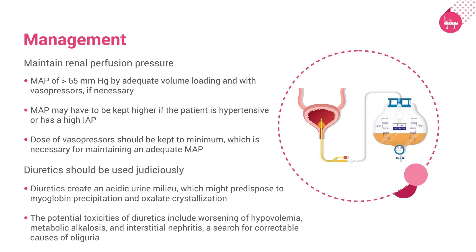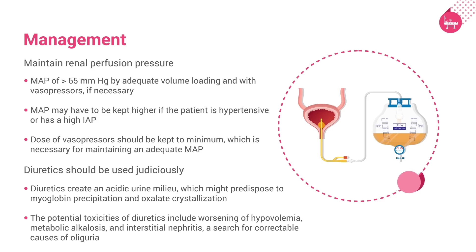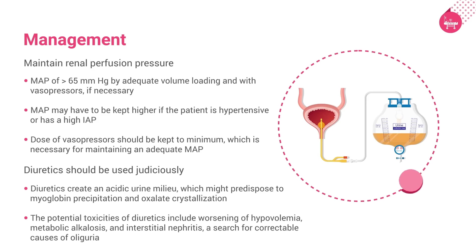Diuretics should be used judiciously. The role of diuretic therapy does not affect renal outcome; however, in non-oliguric renal failure, management becomes easier as it creates intravascular space for administering nutrition, intravenous antibiotics, blood and blood products where necessary. Diuretics create an acidic urine milieu, which might predispose to myoglobin precipitation and oxalate crystallization. Potential toxicities include worsening of hypovolemia, metabolic alkalosis, and interstitial nephritis.